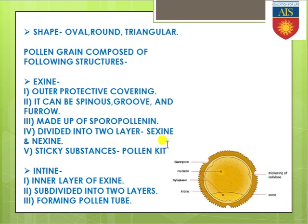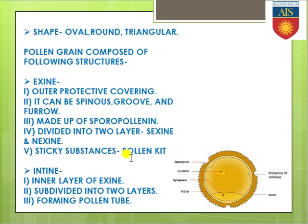In some flowers, the exine of the pollen grain secretes a sticky substance commonly known as pollen kit. This pollen kit is present for getting attached to the insect body during the time of cross-pollination. So that sticky substance, pollen kit, is present in pollen grains that are pollinated by cross-pollination.